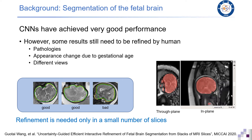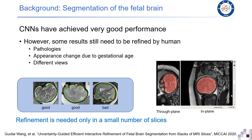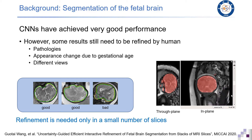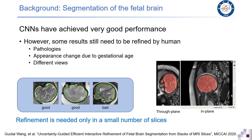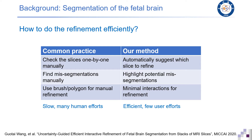For the segmentation task, convolutional neural networks have achieved very good performance. However, in some cases the result is not very good and may require user interactions for refinement. In many cases the result is very good, but in few slices the result is poor and requires user interactions. In common practice, we may ask the user to check the slices one by one and find missed segmentations manually, and then use some brushes or polygons for manual refinement. This procedure is quite slow and requires a lot of human effort.